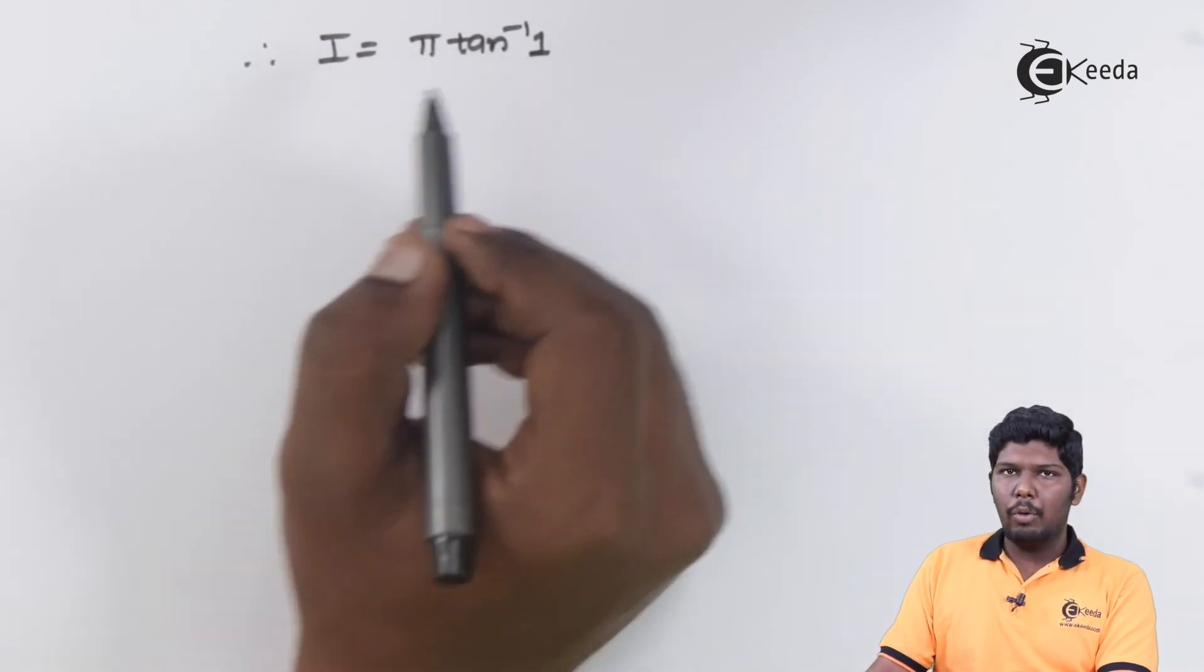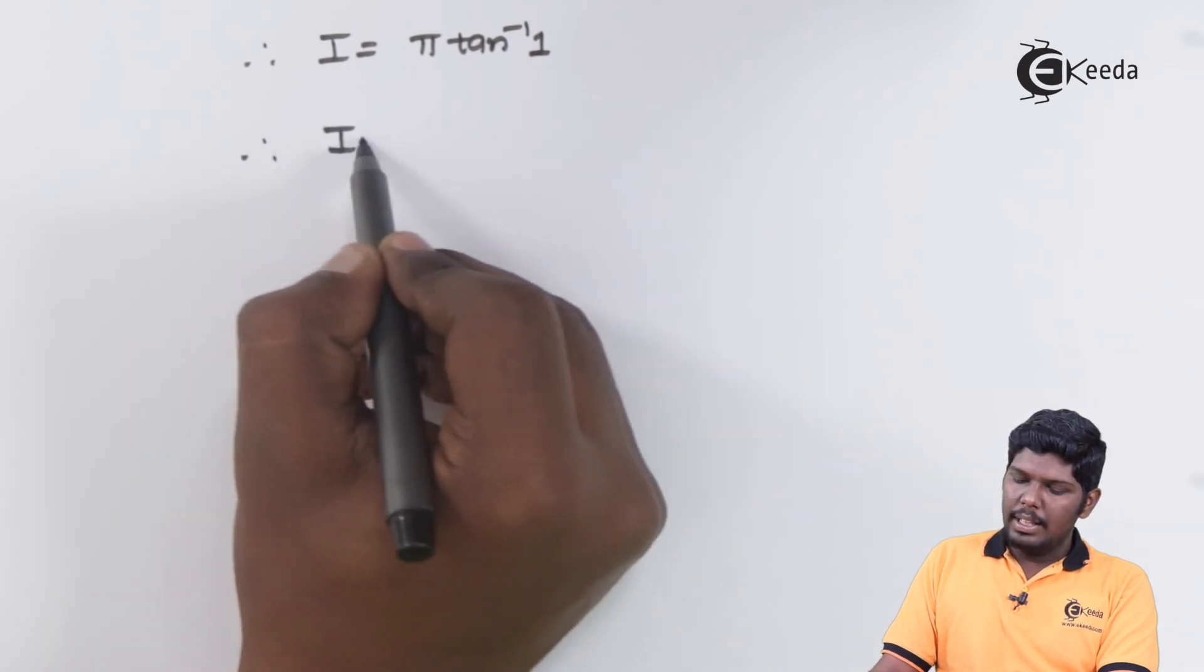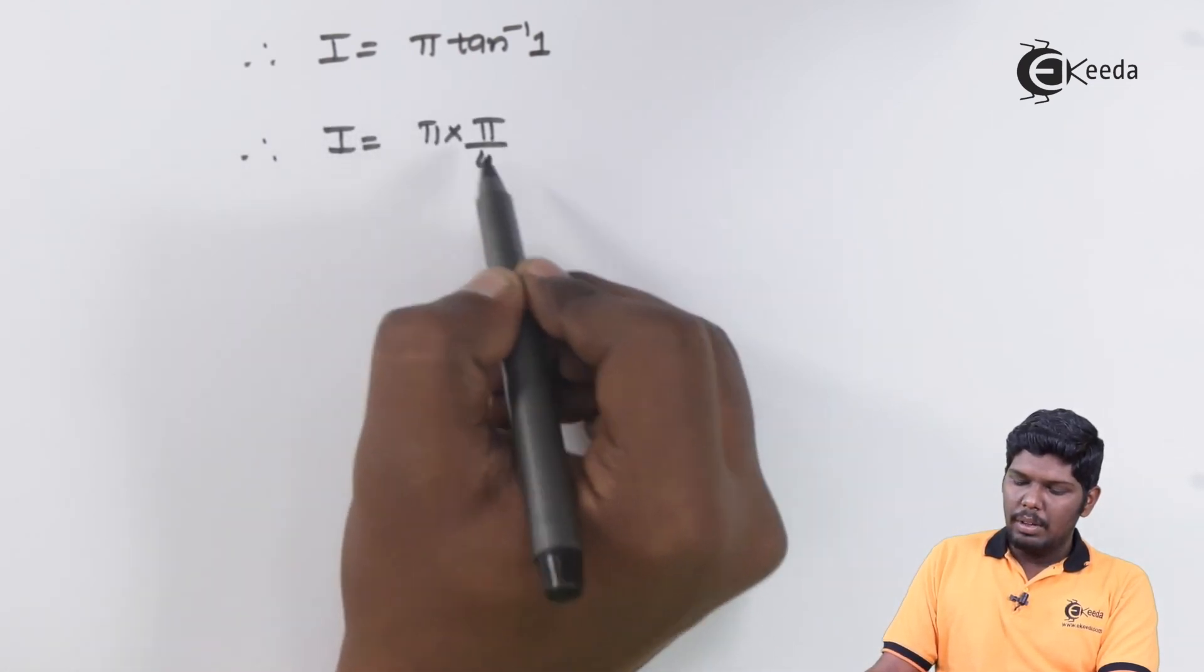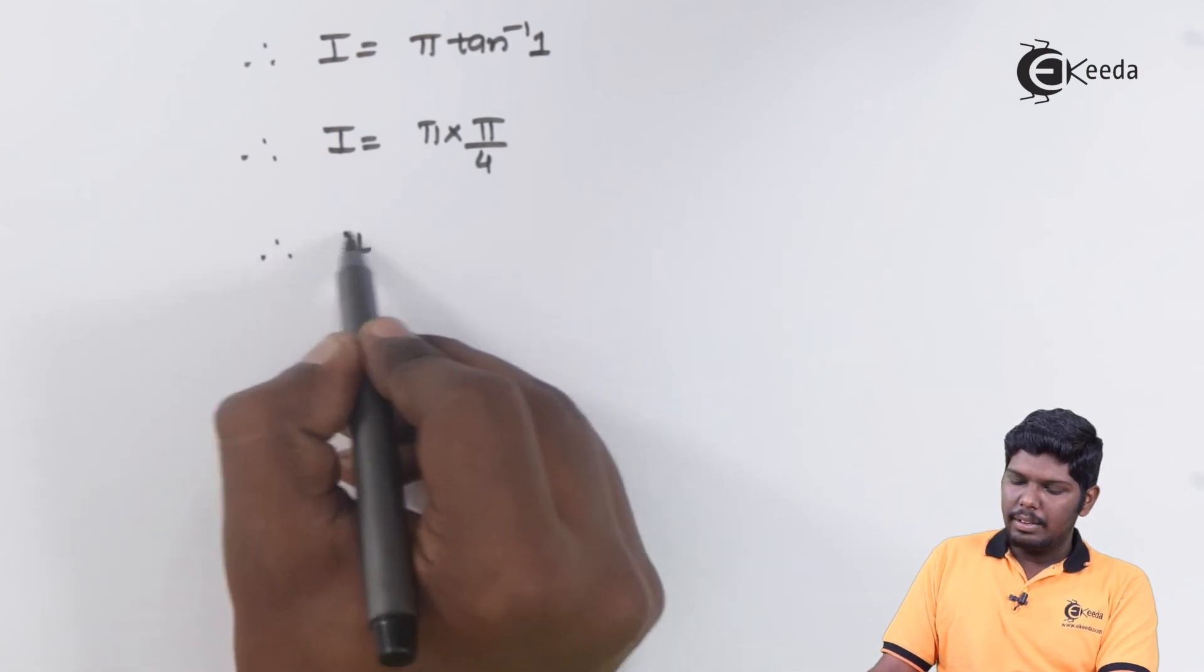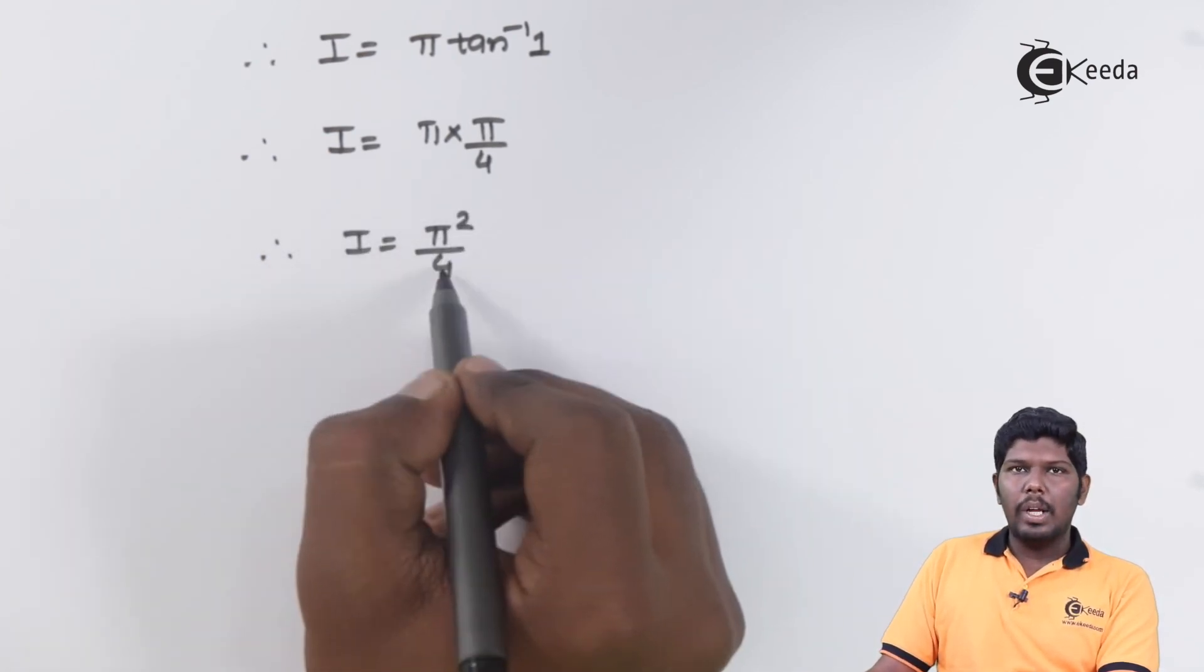Tan inverse of 1 is equal to pi by 4. Therefore, i is equal to pi into pi by 4 that is pi square by 4.